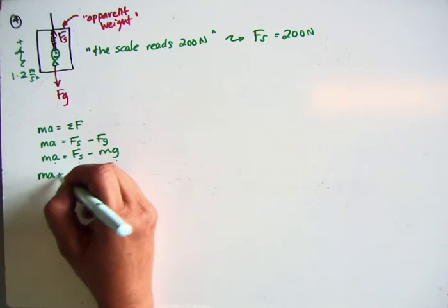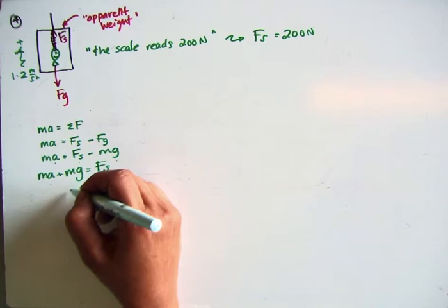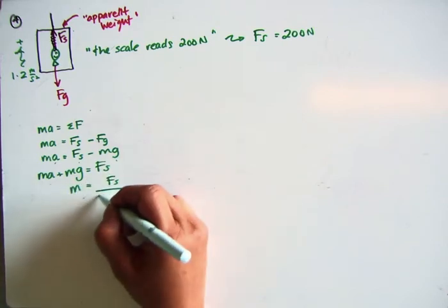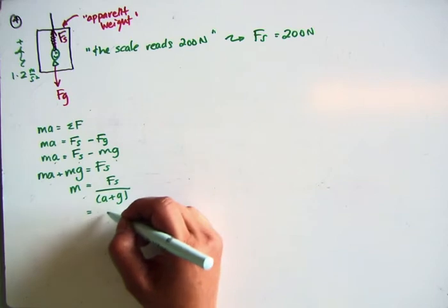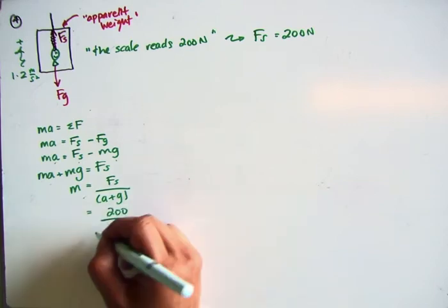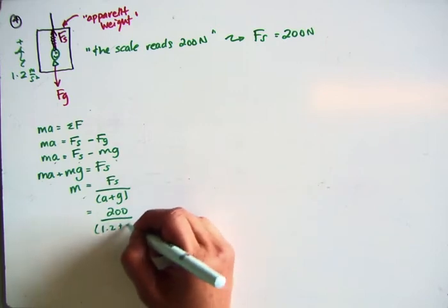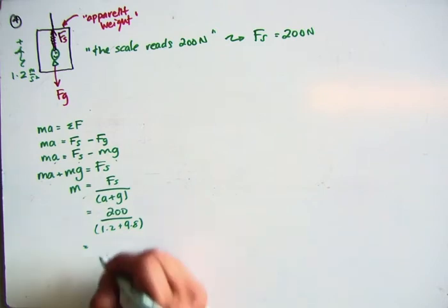So, ma plus mg is equal to fs, so then m is just equal to fs divided by a plus g. So, plugging all this in, I get 200 divided by a is 1.2 and g is 9.8. So solving that, we get 200 divided by 1.2 plus 9.8.